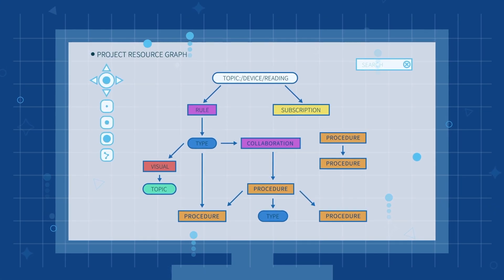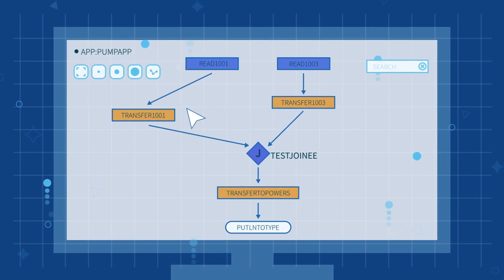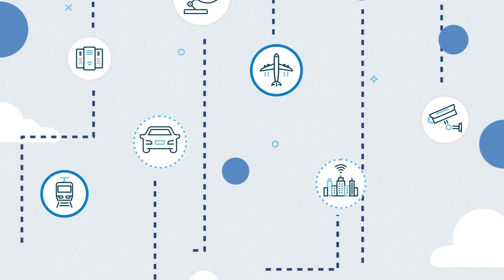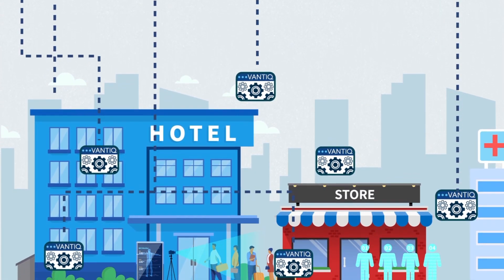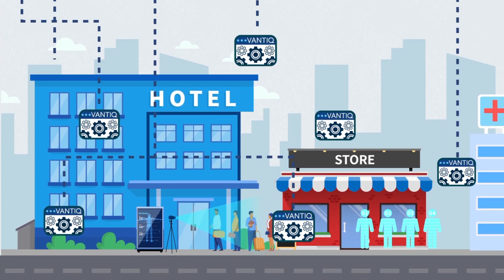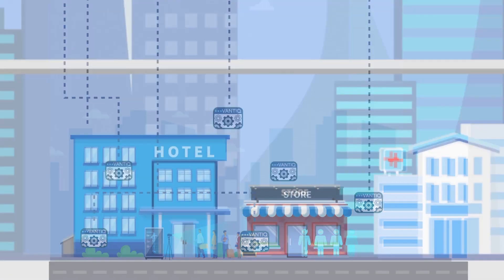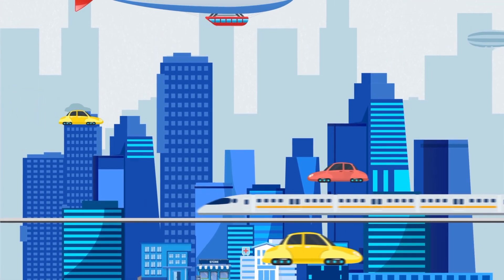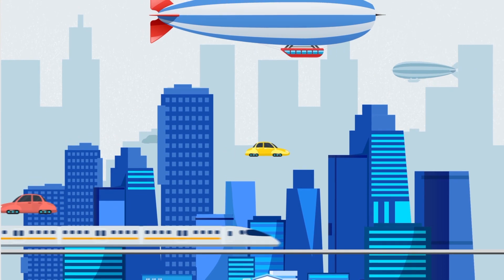Vantic's low-code approach means that you build powerful applications faster than you ever thought possible, so that you can adapt to any current or future needs, no matter what the future brings.